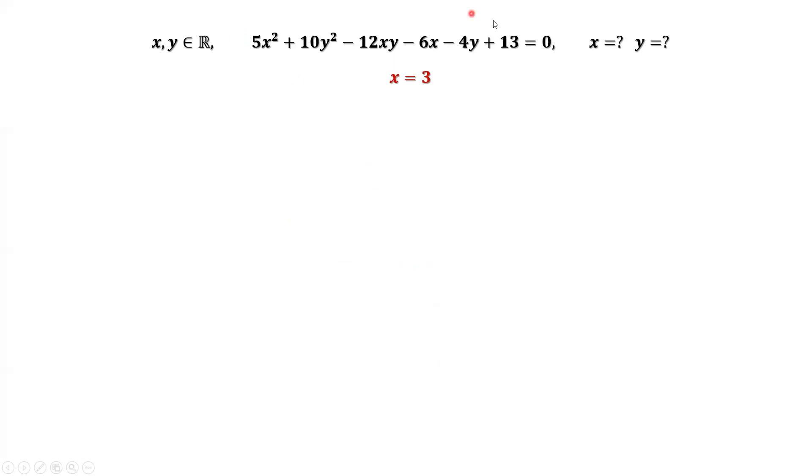This is the given condition. From this given condition, we can replace x by 3. 3² is 9, 9 times 5 is 45. And replace all x here, x here, by 3. We have this quadratic equation about y.